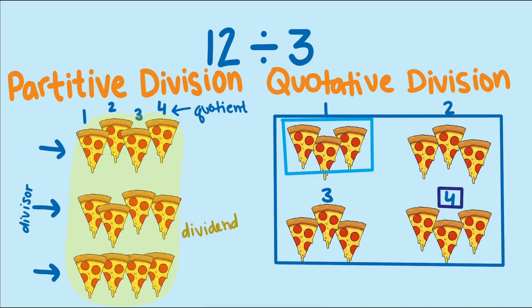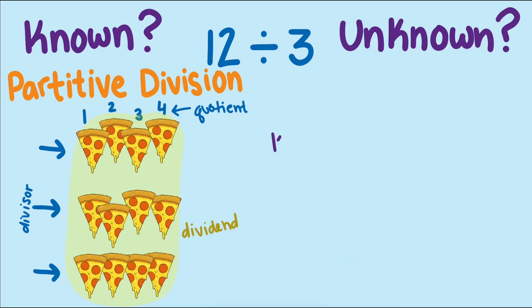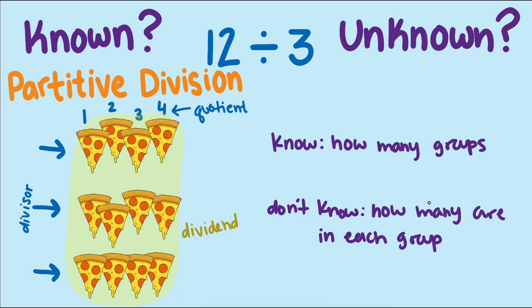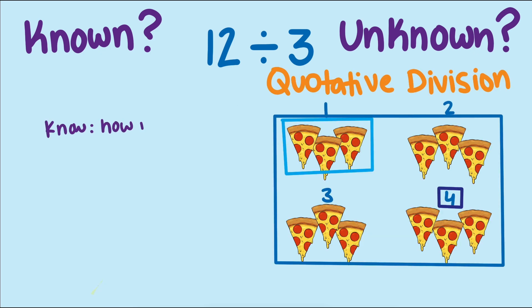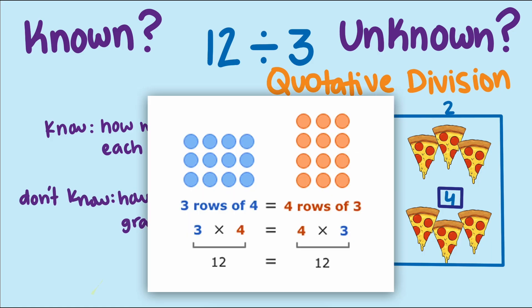One thing that distinguishes these two types of division is what is known and what is unknown. In partitive division we know how many groups we have, but we do not know how many are in each group. And the latter represents the answer. While with quotative division we know how many are in each group, or the size of the group, but we do not know how many groups there are. This difference comes from the commutative property of multiplication and is why these two types of thinking about division exist.